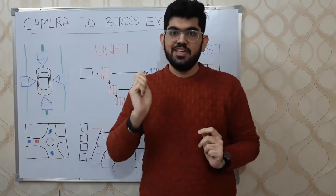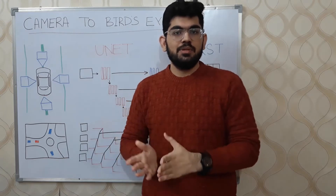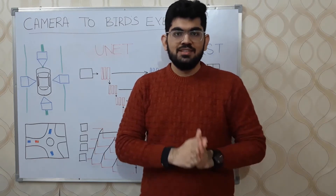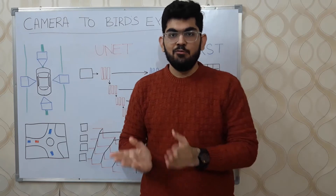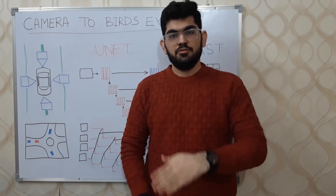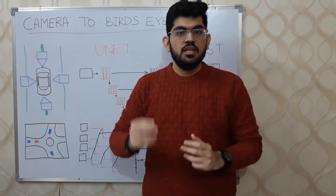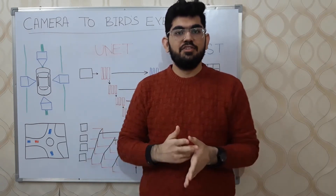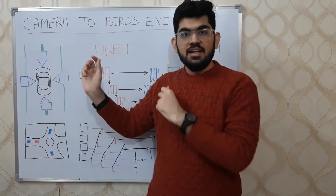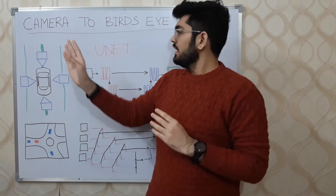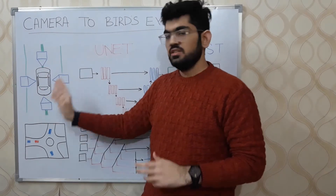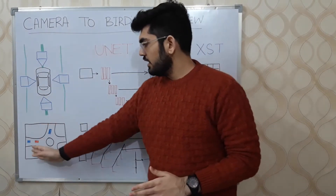Let us start with the problem definition. Given a set of images taken from the different cameras present on a self-driving car or a robot, we are required to process these images and output a bird's eye view of the given environment. Bird's eye view or top view means viewing the 3D scenes from the top. As input, we can have a single image or multiple images from different cameras. In this case, we have 4 cameras: front, left, right, and back. Given these 4 images, we output the bird's eye view of the environment around the car.